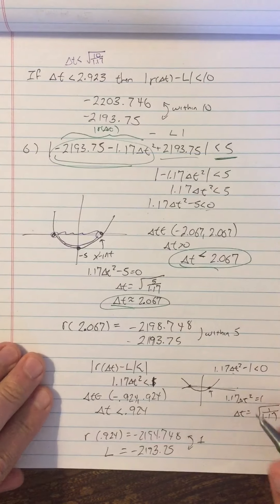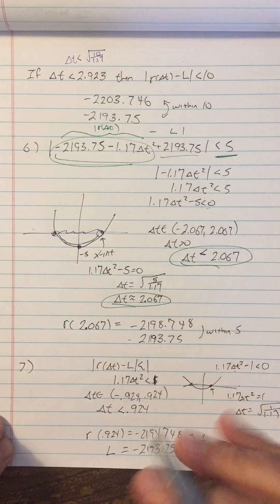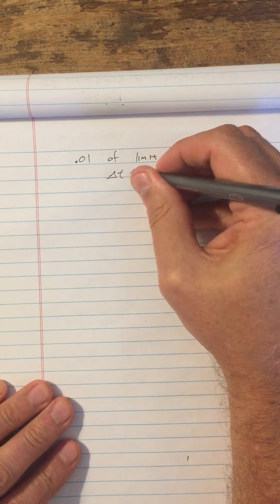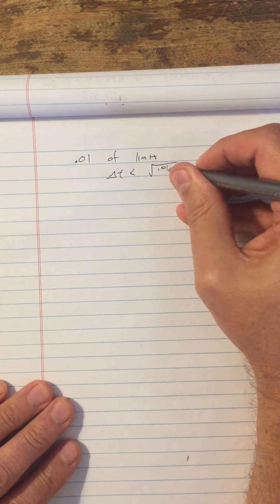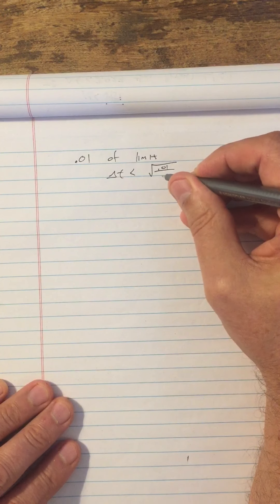Now here's what's critical. I can do that process for any real number. If I want to get within 0.01 of the limit, all I have to do is delta t is less than the square root of 0.01 over 1.17.